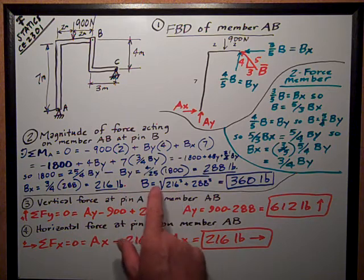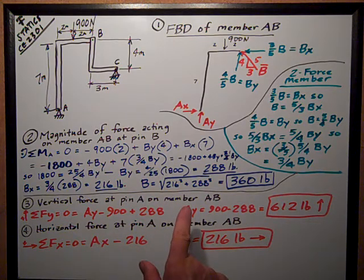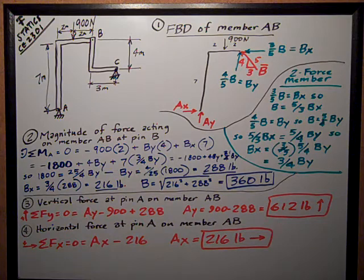So B is equal to the square root of the sum of the squares, 216 squared plus 288 squared equals 360 pounds. So that's the answer for number 2.